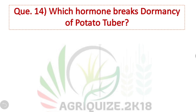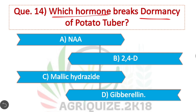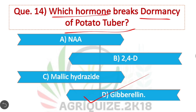Question 14: Which hormone breaks dormancy of potato tubers? Option D is correct. Gibberellin is used for breaking the dormancy of potato tubers.